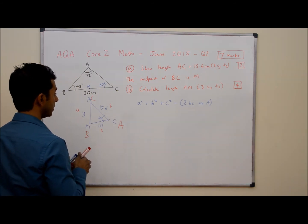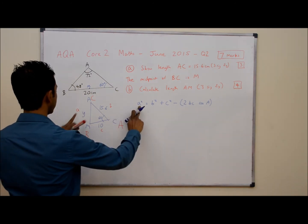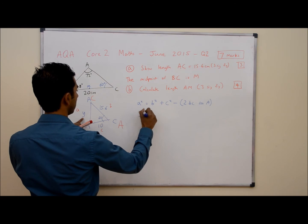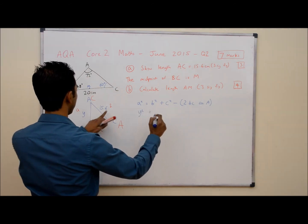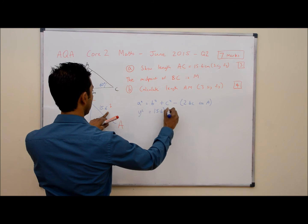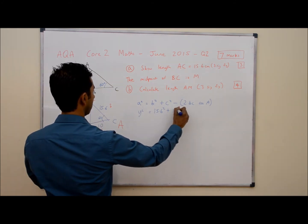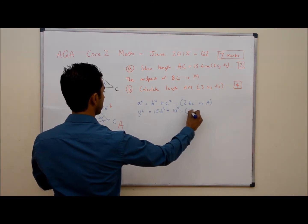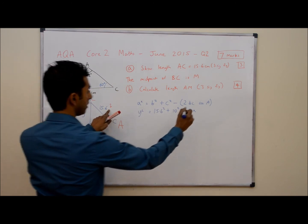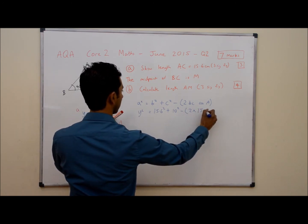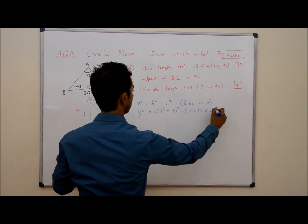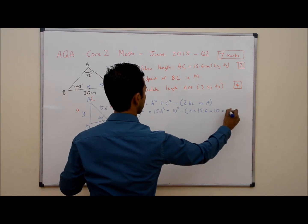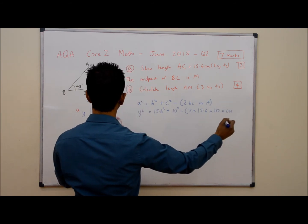So now let's substitute in our values. So A squared now becomes Y squared equals B squared, which is 15.6 squared plus C squared minus 2 times B times C times cos of A, which is 60.